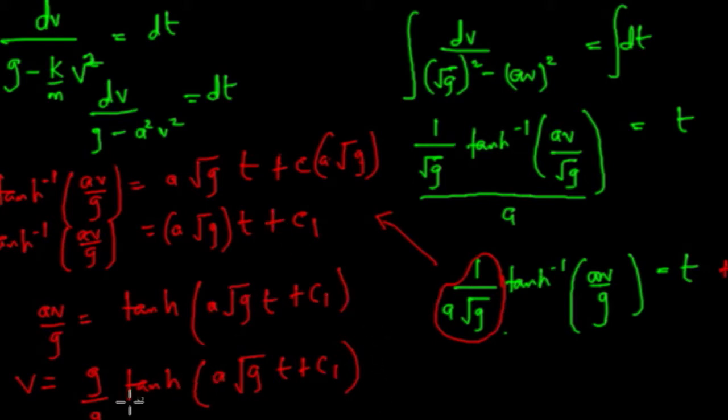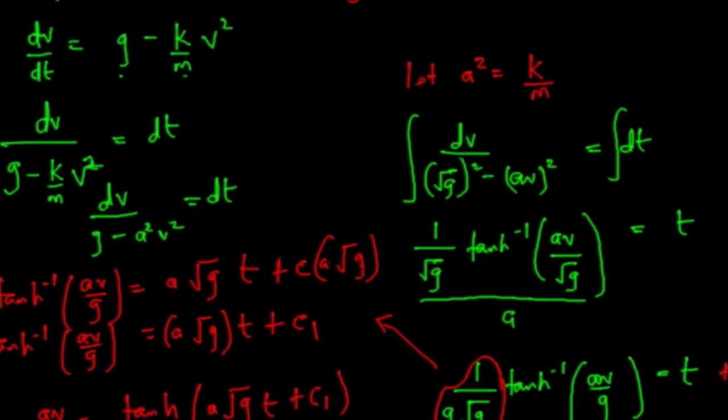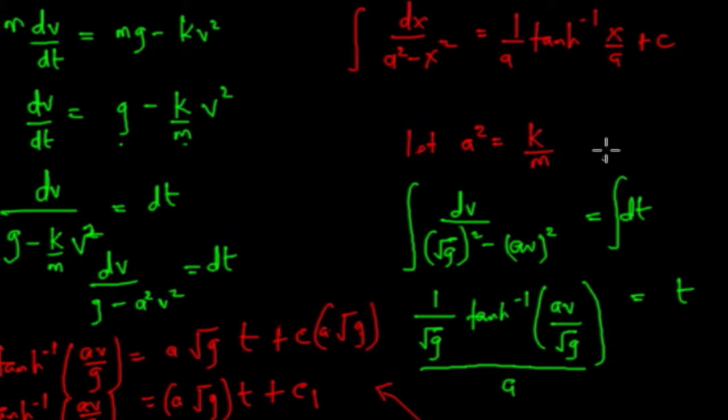Now don't forget, we had a particular representation. We said our a here, we said a squared equals k over m. So this implies that a equals square root of k over m.